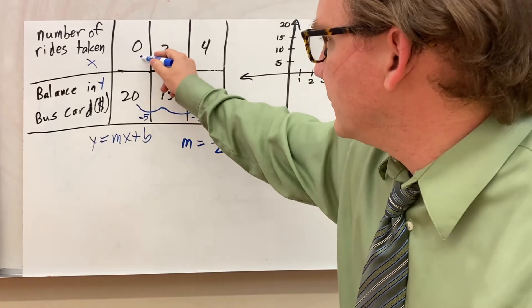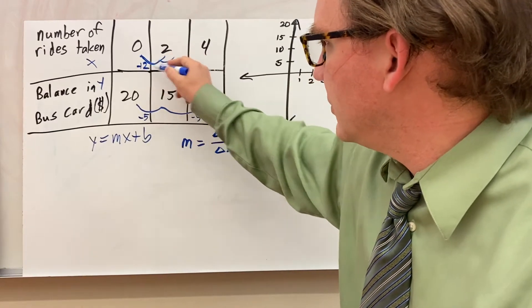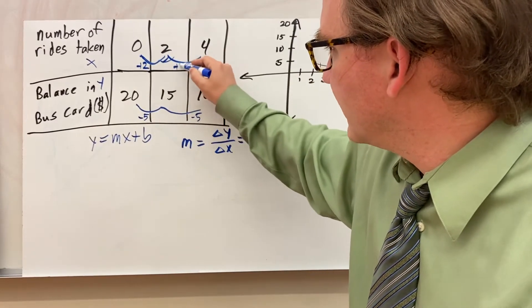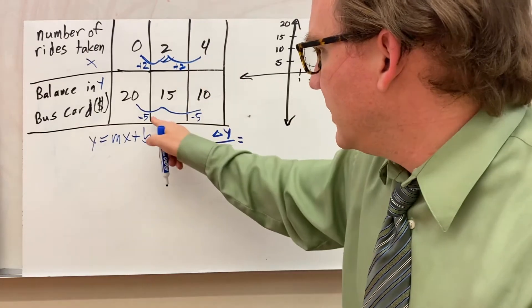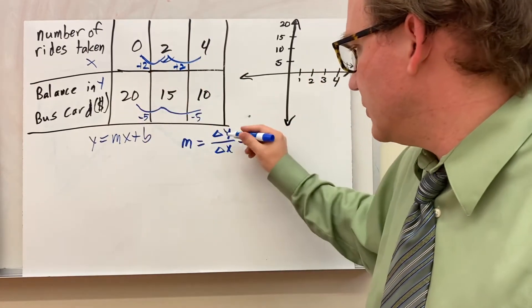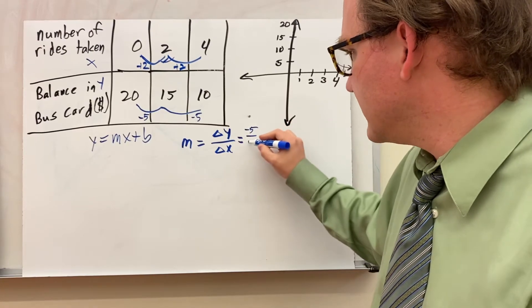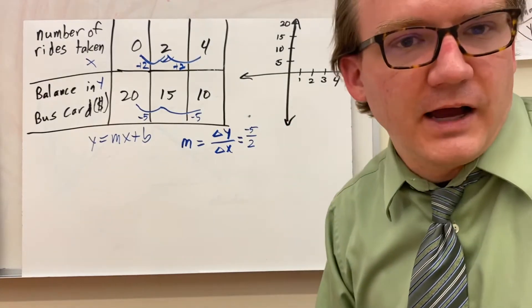So what's going on with the x at the same time? It goes 0 to 2, so it's plus 2. And 2 to 4 is plus 2. So it's a constant rate of minus 5 over plus 2. So y is minus 5, x is plus 2. So negative 5 halves.